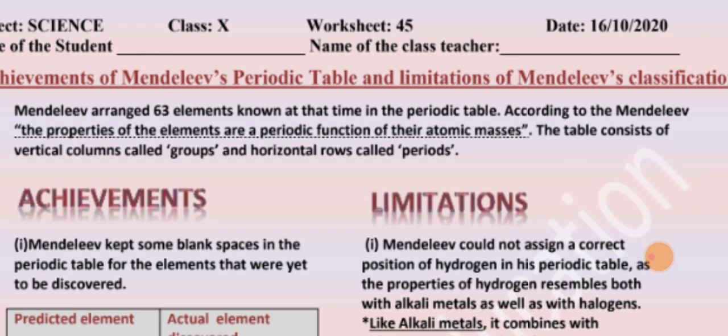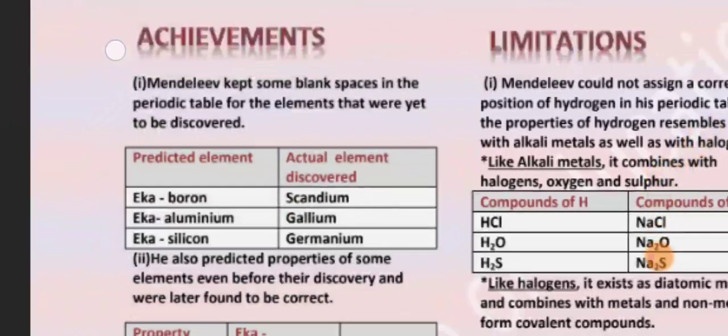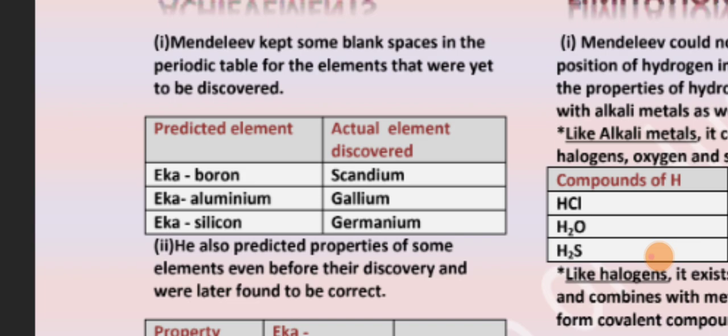Now we will study the achievements of Mendeleev's Periodic Table. The achievements are that Mendeleev kept some blank spaces in the periodic table for elements that were yet to be discovered.